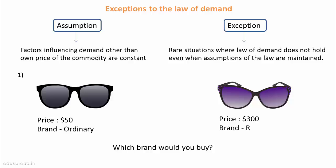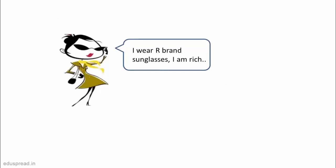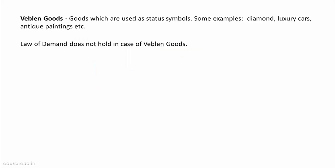And in fact, this is why the R brand is in business — because there are a lot of people who buy R brand sunglasses even if they are expensive. This is because these people desire to buy luxury goods. They don't buy these sunglasses because the quality is worth the price, but because these sunglasses are associated with a prominent brand, Brand R. It is their way of showing off and telling others that they are rich. These types of goods which are used as status symbols are called Veblen goods.